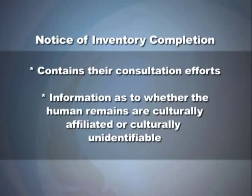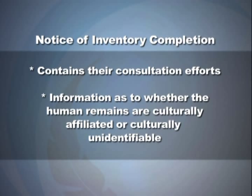Now that we've outlined the inventory process, we'll discuss what goes into a Notice of Inventory Completion. A Notice of Inventory Completion is done after the museum or federal agency has completed their inventory, which contains their consultation efforts, information on whether the human remains are culturally affiliated or culturally unidentifiable, how and why this determination was made, and how many individuals and associated funerary objects are in this determination. Once a museum or federal agency makes a culturally affiliated determination, they have an affirmative obligation to submit a Notice of Inventory Completion to the National NAGPRA Program.